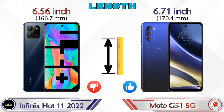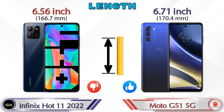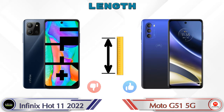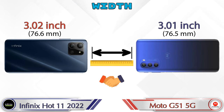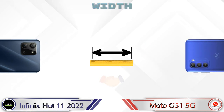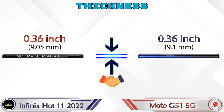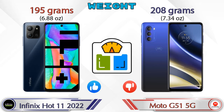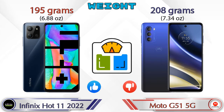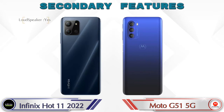Now we check the details about dimensions. Talking about the length: Hot 11 2022 is 6.56 inches and G51 5G is 6.71 inches. Width: Hot 11 2022 is 3.02 inches and G51 5G is 3.01 inches, which are almost the same. Both phones have the same thickness of 0.36 inches. Talking about weight, Hot 11 2022 is 195 grams and G51 5G is 208 grams, which is heavier than Hot 11 2022.